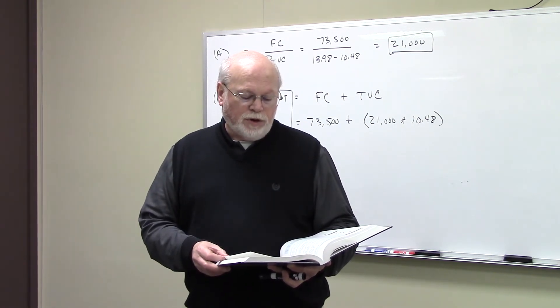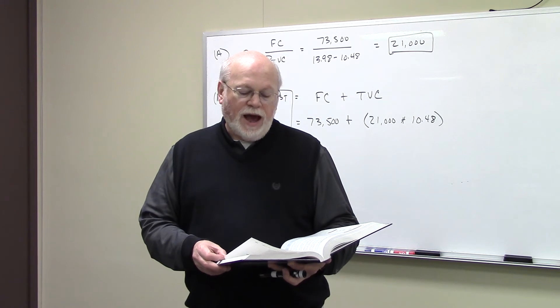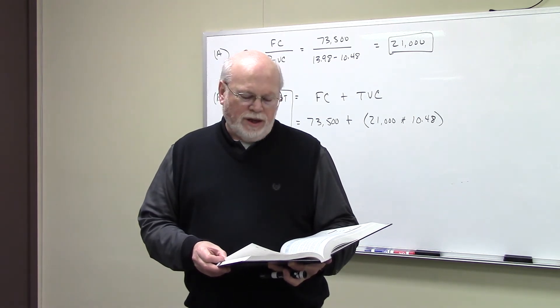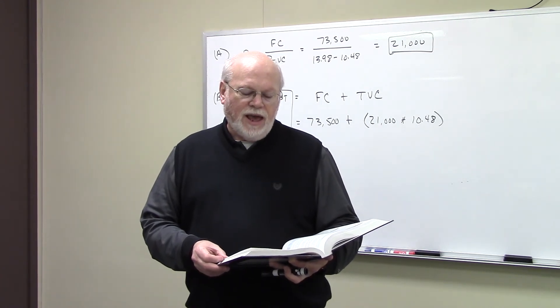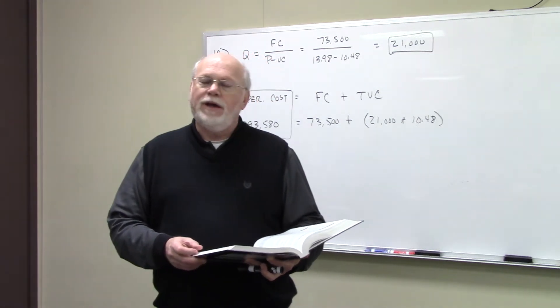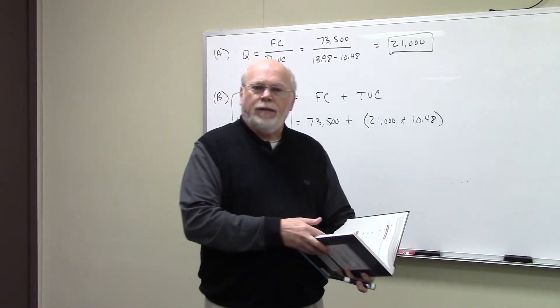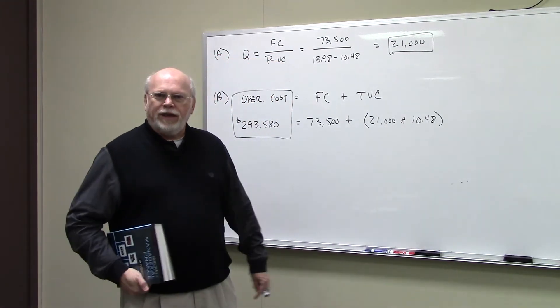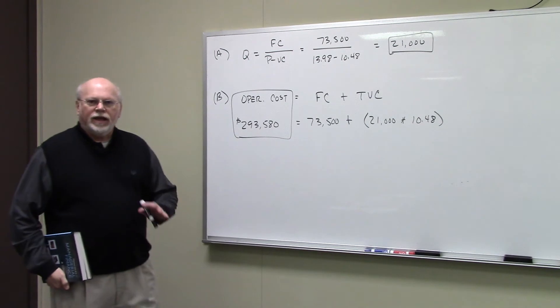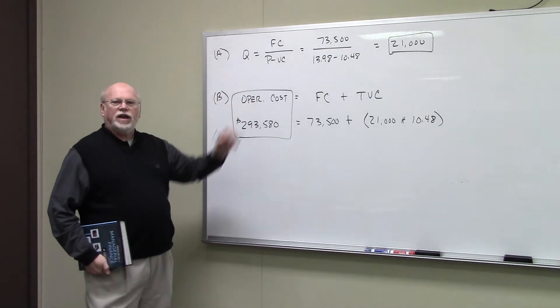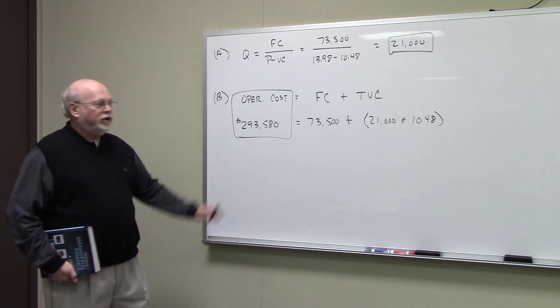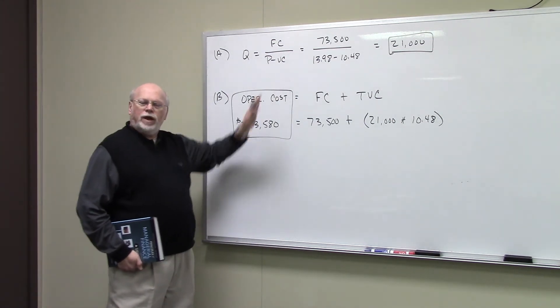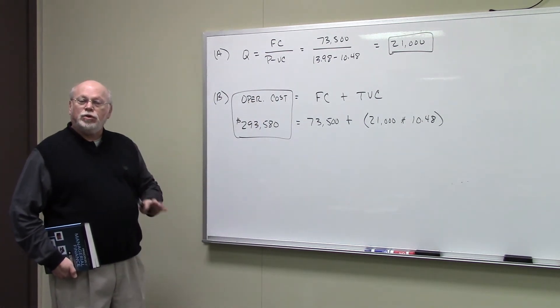In the first part, they want us to calculate the operating breakeven point in the number of DVDs. In the B part, calculate the total operating cost at the breakeven volume found in the first part. Now, to calculate breakeven, remember it's your fixed cost divided by the price per unit minus the variable cost per unit. This denominator, by the way, is referred to as the contribution margin.